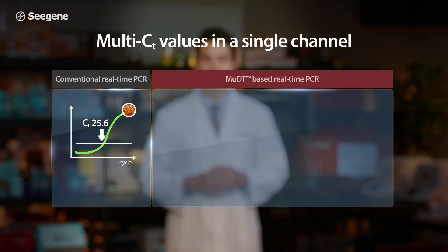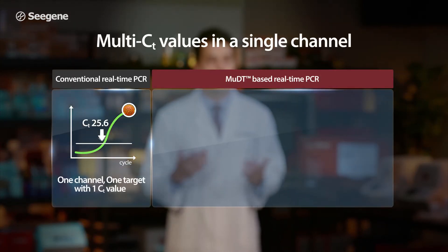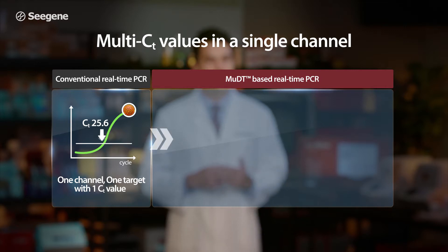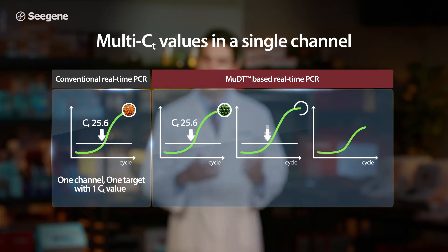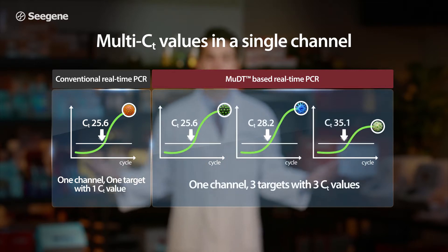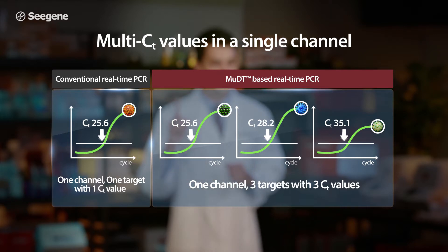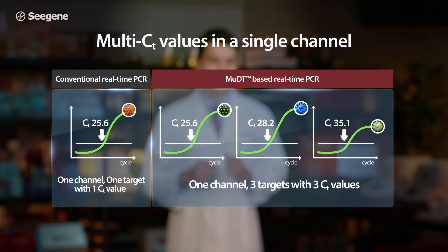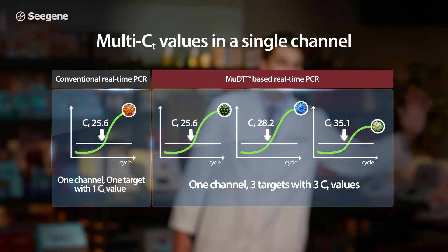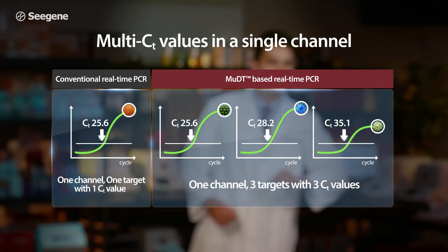MUDT breaks through the one-channel, one-CT-value limitation. Now, with MUDT, multiple targets having different CT values can be detected in a single fluorescence channel. This is MUDT technology's key advantage.